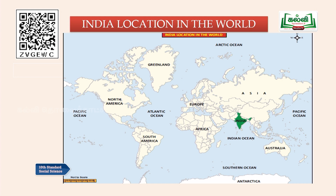India's location in the world: in this world map there are seven continents - North America, South America, Africa, Europe, Asia, Australia, and Antarctica. Asia is the biggest continent. India is located in the southern part of the Asian continent, shown by the green shading. Below India there is an ocean called the Indian Ocean, which is the strategic location of India allowing easy contact with eastern and western countries for trade activities.